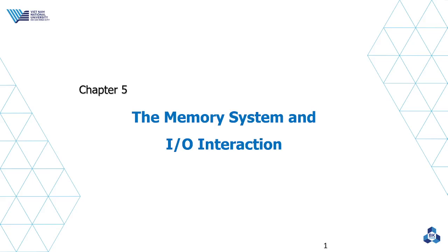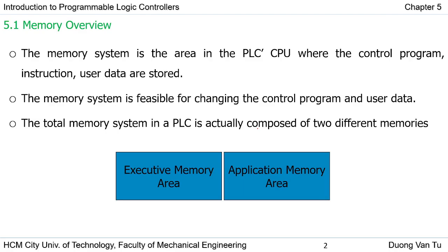Hi everyone, today we talk about chapter 5, the memory system and I/O interaction. First, we will consider the overview of the memory system in the PLC. In the PLC, we use the memory system to store the control program, instructions, and user data.